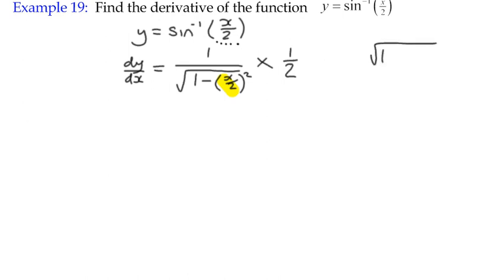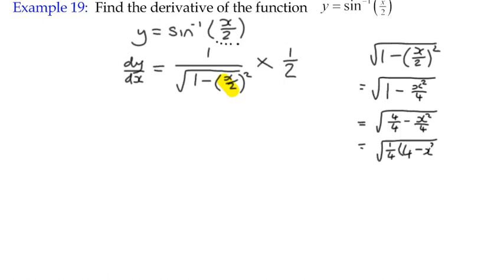If I were to write over here 1 minus (x/2) squared, that's the same as the square root of 1 minus x squared over 4. Now when a fraction appears, you're going to have to create a common fraction. In other words, we're going to have to do that subtraction. So if you make the 1 four quarters to match the other denominator, then effectively we've got a quarter times (4 minus x squared).